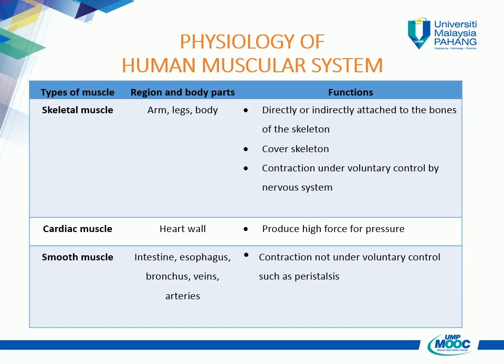Heart muscle, or cardiac muscle, is a unique combination of skeletal muscle and smooth muscle. It has its own built-in contraction rhythm of 70 beats a minute and special muscle cells that work like nerve cells, transmitting signals for waves of muscle contraction to sweep through the heart. Most involuntary muscles form sheets or tubes, such as the intestine or blood vessels. They are called smooth muscle because they lack the bands or stripes of voluntary muscles.